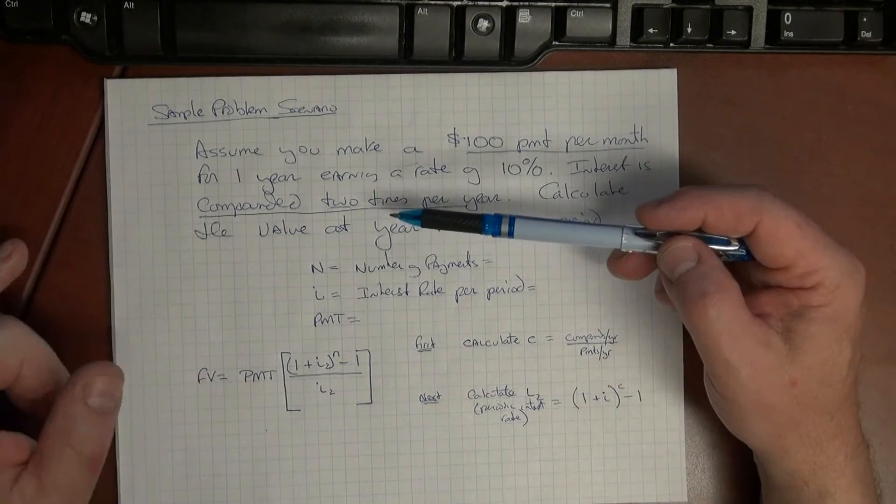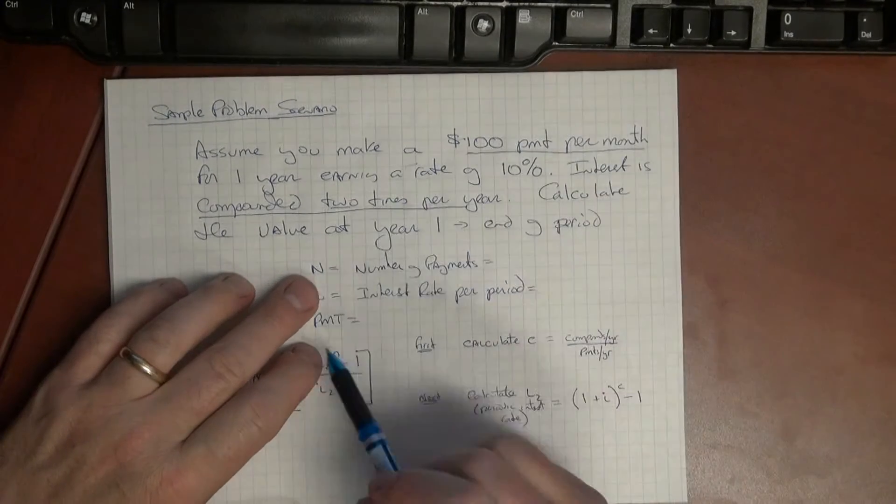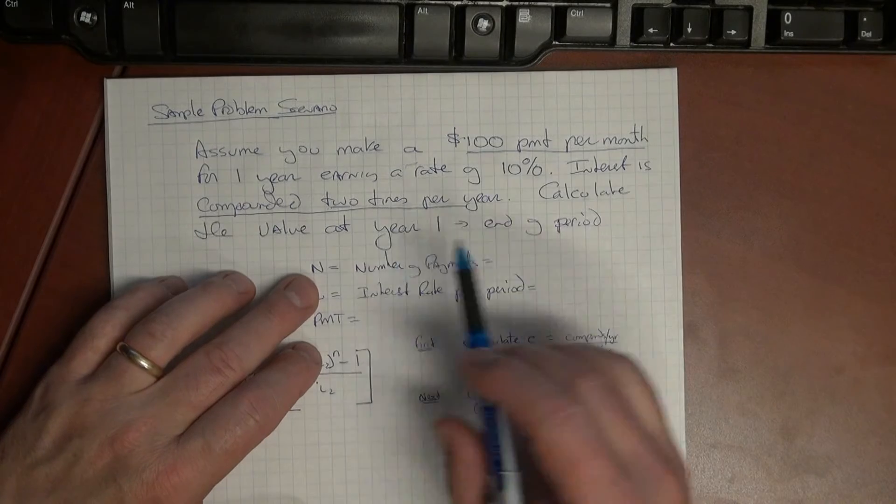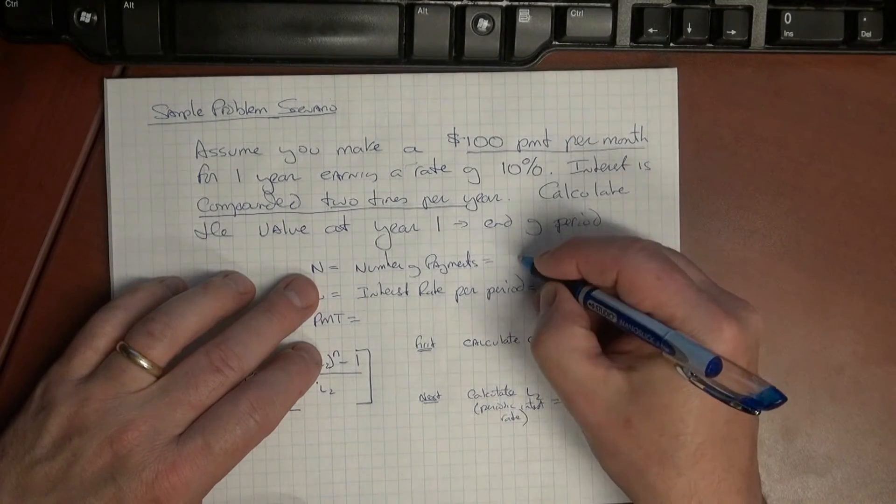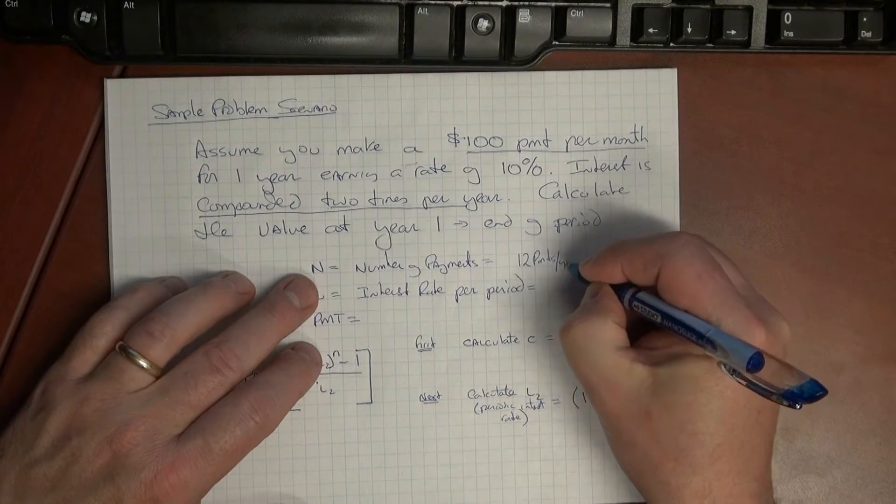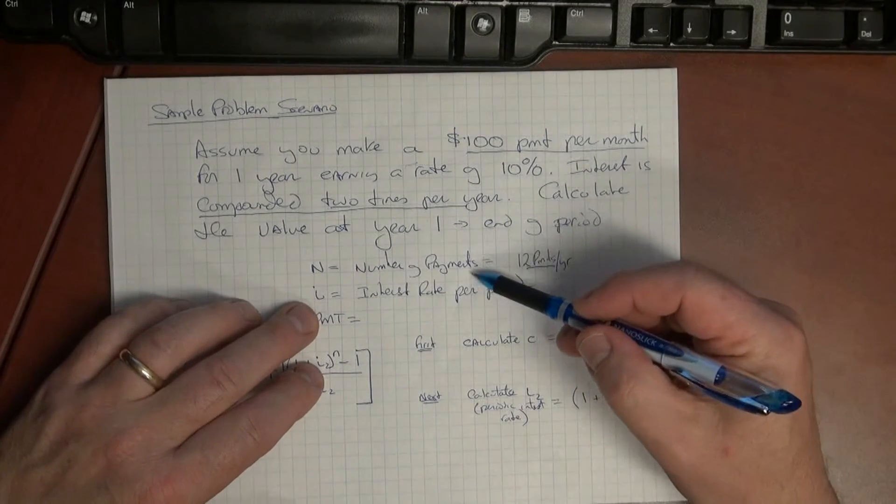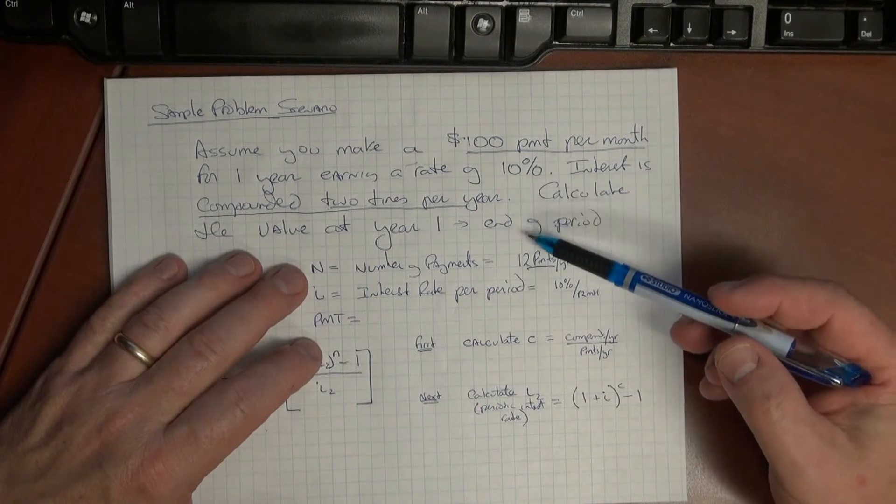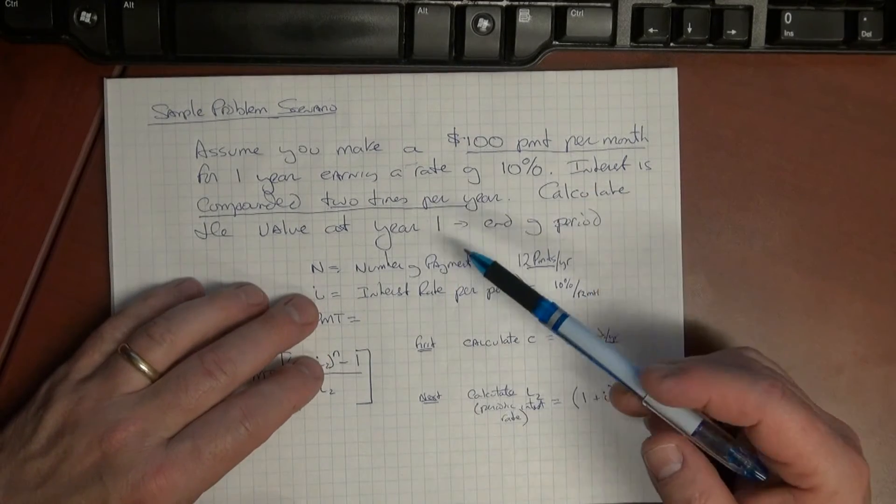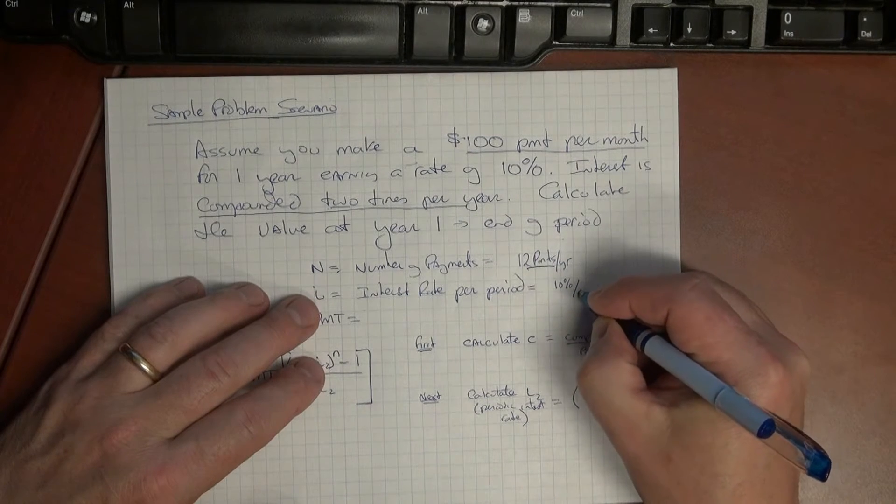Okay, what do we need to do in order to do this? Well it's a couple things we need to be able to pull out of every problem. First of all we want to get the value of n which is the number of payments. So we know here that there are 12 payments per year. We also want to get the interest rate per period. That's the first thing we want to do. The next thing we want to do is look at the interest rate per period. So we've got ten percent divided by two payments, so it's five percent per payment.